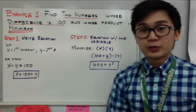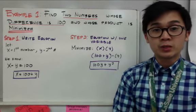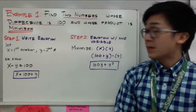Let's have the first example. In our first example, we need to find two numbers whose difference is 100 and whose product is minimized.